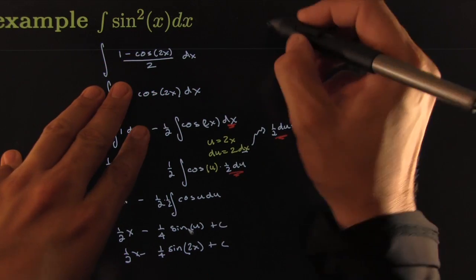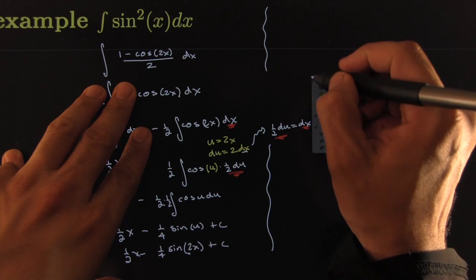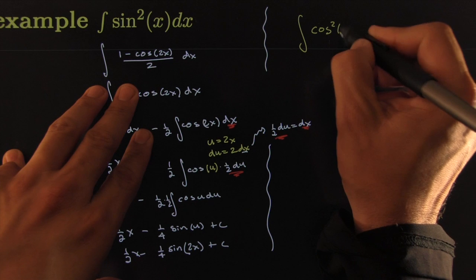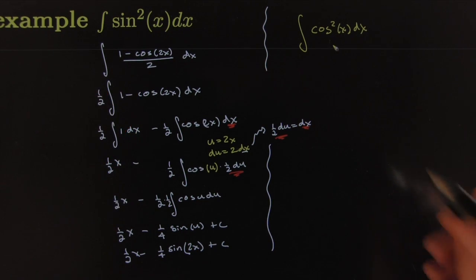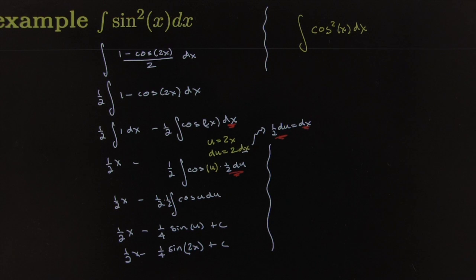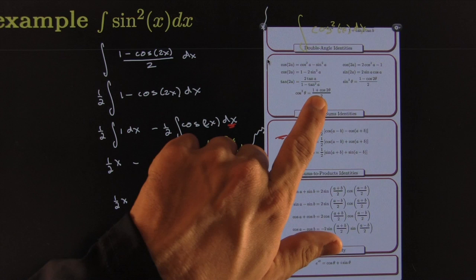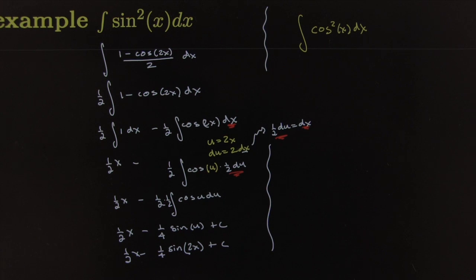By the way, the same idea would hold if you had to integrate something like cosine squared x dx. You would use the same technique except that for this one there's a different identity. I can pull that up from our identity sheet. Here we've got a different one for cosine squared x. Cosine squared x would be 1 plus cosine 2 theta over 2. So the only difference here would be that this one would turn into...